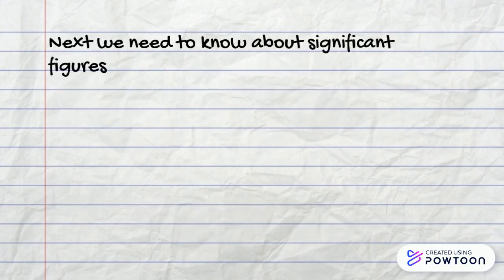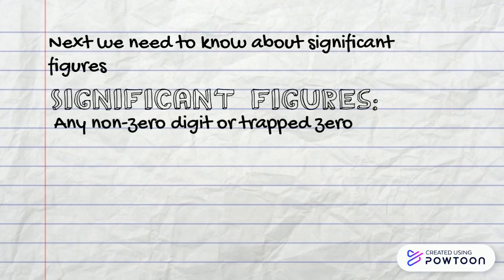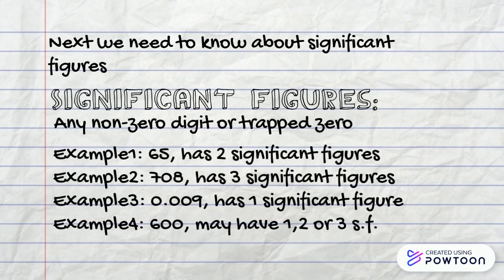Next we need to know about significant figures. Significant figures are any non-zero digit or trapped zero. 65 has 2 significant figures. 708 has 3 significant figures. 0.009 has 1 significant figure. And 600 may have 1, 2 or 3 significant figures.